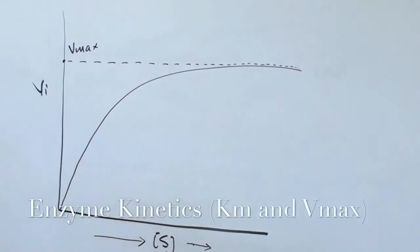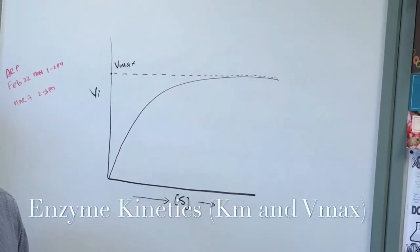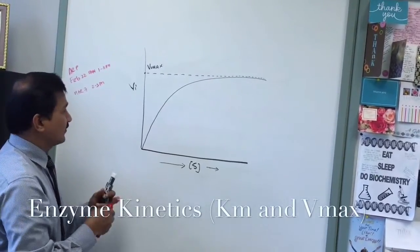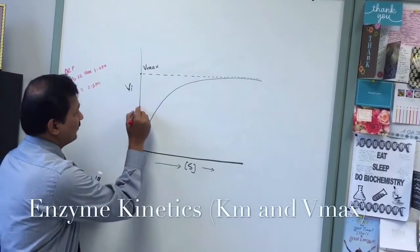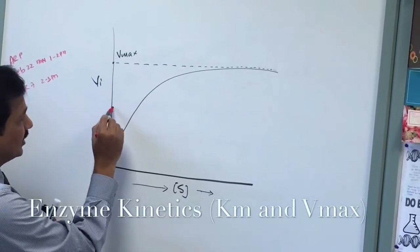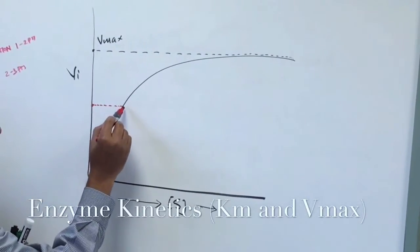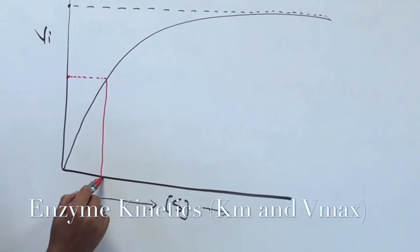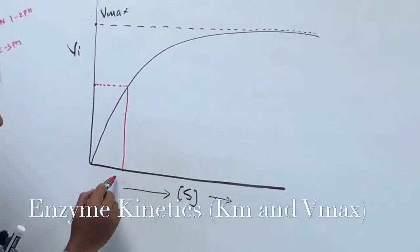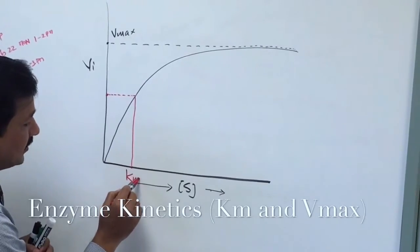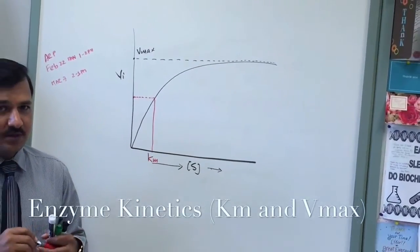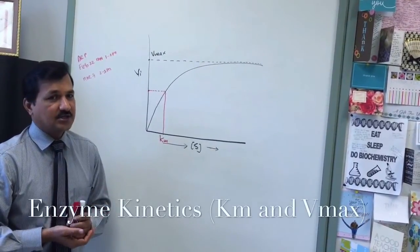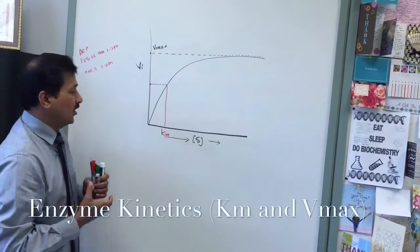Wherever the curve plateaus, bring that point to the y-axis — wherever it meets on the y-axis, we refer to that point as Vmax, the maximum capacity of that set of enzymes. Then take half of that Vmax, interpolate that line to the velocity curve, bring it down to the x-axis, and wherever it meets on the x-axis we call that KM of that particular enzyme. KM is a signature of an enzyme for that particular substrate — it doesn't change.